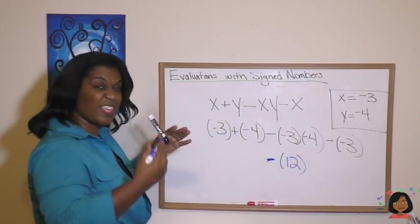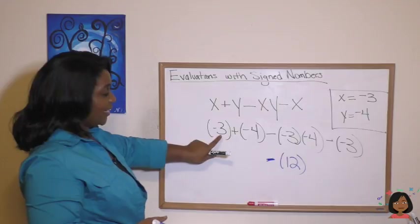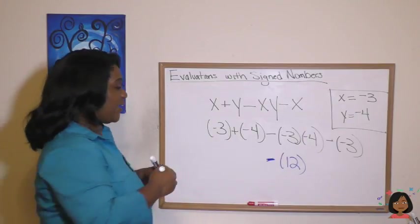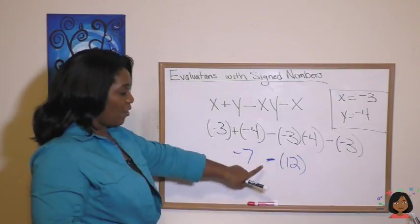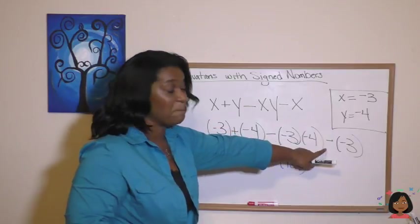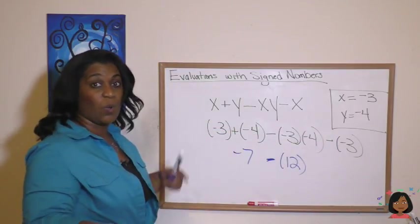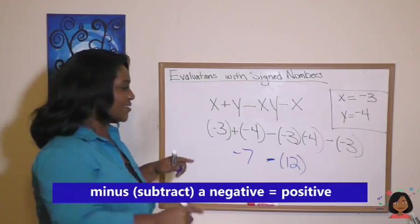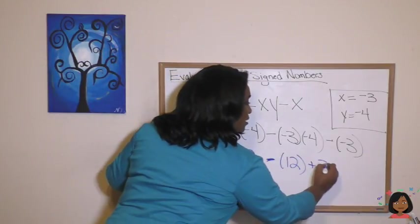Now let's work things around that. Negative three plus a negative four is a negative seven. We already have our minus 12. And now we're here, we have minus a negative three. Well, a minus a negative turns into a positive. So we have plus three.